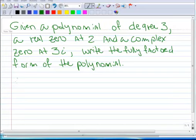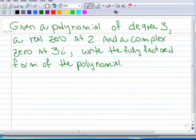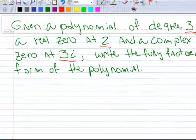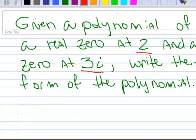Okay, here's an example. Given a polynomial of degree 3 with a real zero at 2 and a complex zero at 3i, we want to write the fully factored form of the polynomial.